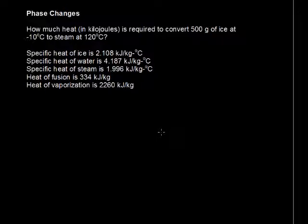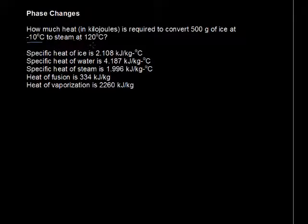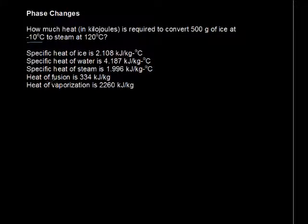In this video, I'll walk through some phase changes of the compound water, specifically converting ice at a certain temperature all the way to liquid, and then bringing that liquid up to temperature, and then converting that liquid into steam, and then bringing that steam up to temperature. So the idea is we have 500 grams of ice which begins at negative 10 degrees Celsius, and ultimately we will turn that into steam at 120 degrees Celsius. The question is how much heat in kilojoules is required to do that. We have all this information here for specifically the H2O compound, which is our water.